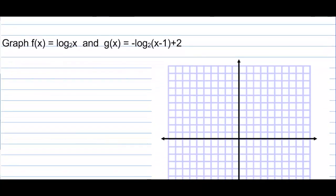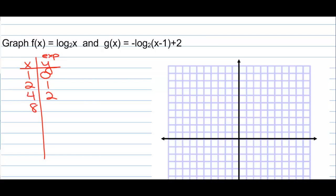We did an exponential graph — now how about a log graph? The trick is usually picking the x-values. For y = log base 2 of x: 2 to the 0 is 1, so if x is 1 then y is 0; if x is 2, that's 2 to the 1st so y is 1; 2 squared is 4 so y is 2; 2 to the 3rd is 8 so y is 3. The y-value is the exponent, because logs always evaluate to the exponent. Notice we're just flipping the x's and y's from the exponential — they're inverse functions.